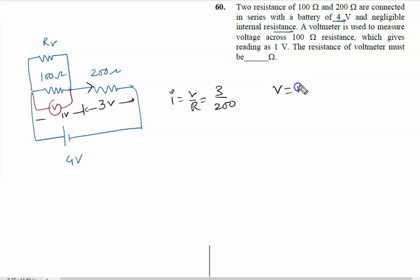Now this voltmeter is giving 1 volt. Again you will apply V equals IR. V is given by 1 volt, same current will flow through this combination. So that is 3 by 200, and net resistance is given by Rv in parallel with 100, upon Rv plus 100.